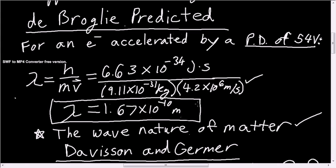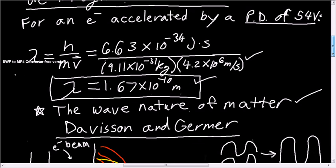And at this speed, the electron would have a wavelength of 1.67 times 10 to the minus 10 meters. Before this experiment, this was only a prediction. No one had any proof that this actually occurred.